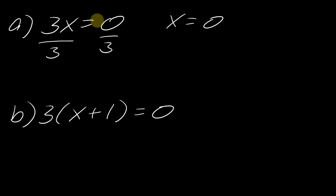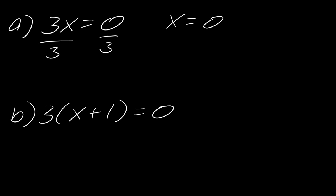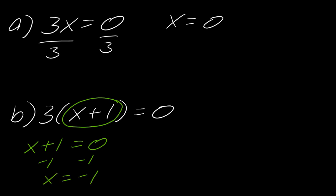Now I want to add on a little bit to this. Instead of having 3x equals zero, what happens if I have three times x plus one equals zero? Well, from the zero product rule, x plus one must equal zero. So I can set this factor equal to zero and solve it. This gives me that x must equal negative one. That's the only way this whole thing will end up equaling zero, and that would be the solution.